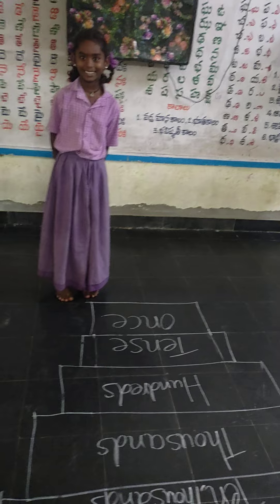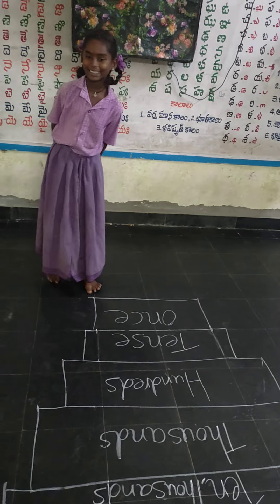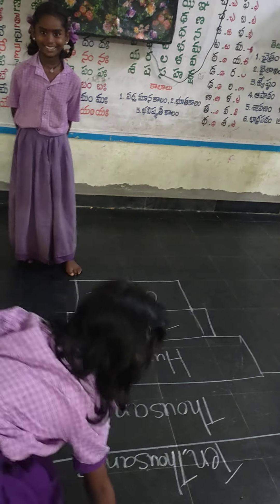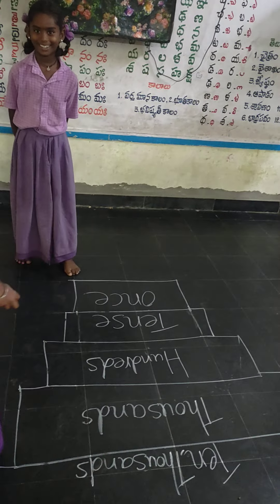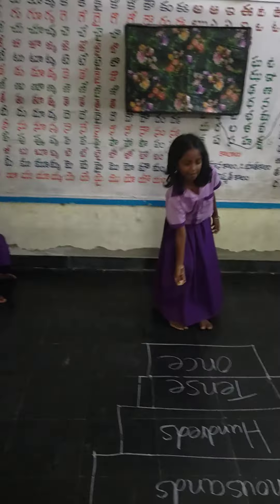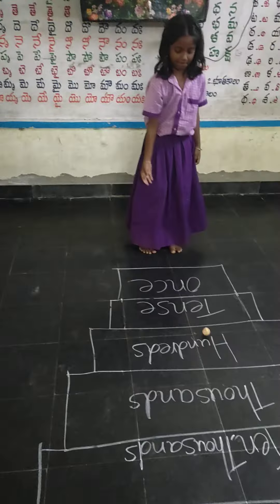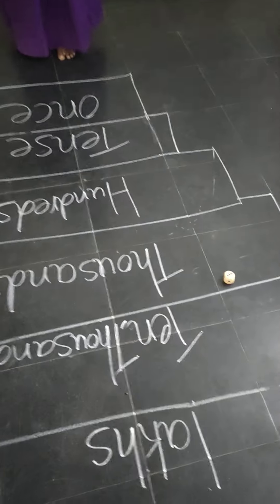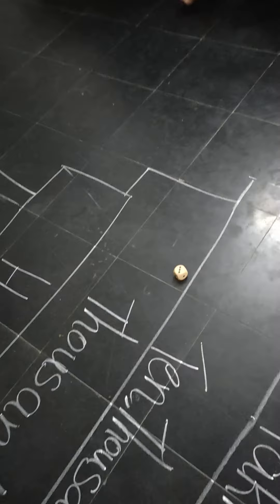Next stage, come on. How many lakhs? Three lakhs? No. Teju, how many lakhs? Thousands. How many thousands? Three thousands.